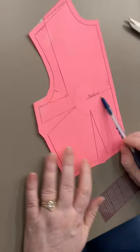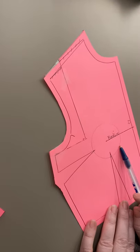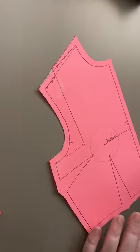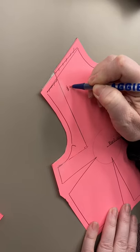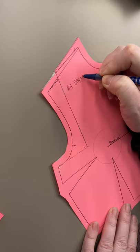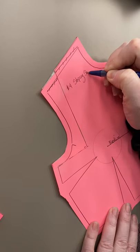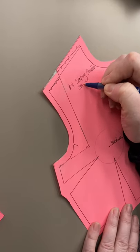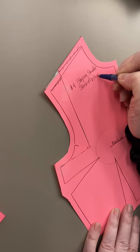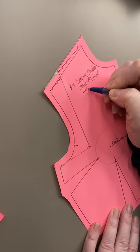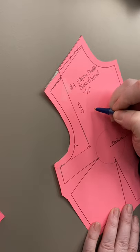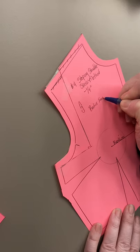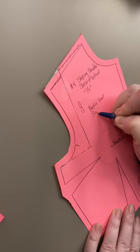All this one needs is labeling. It is a front. The bust line is important, the bust circle is important. Make sure you label your center front. This one is number four. It is a sloping shoulder. It is the slash method. We still took out a quarter of an inch. My name is Jen. This is a bodice front, still a size 10, half scale.